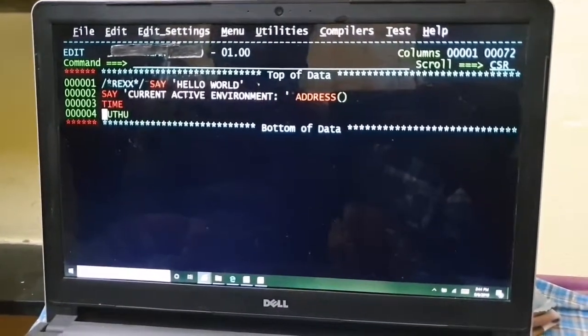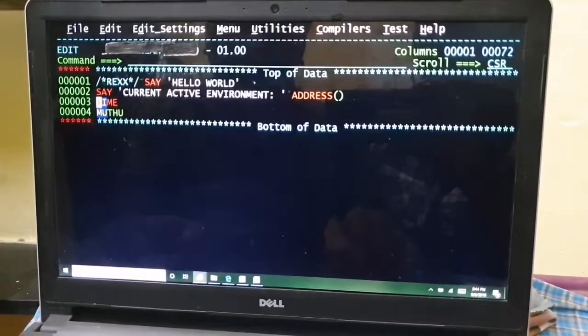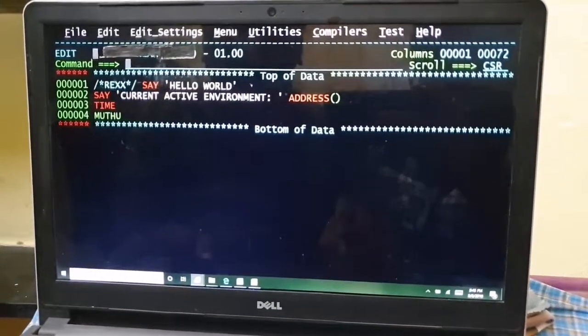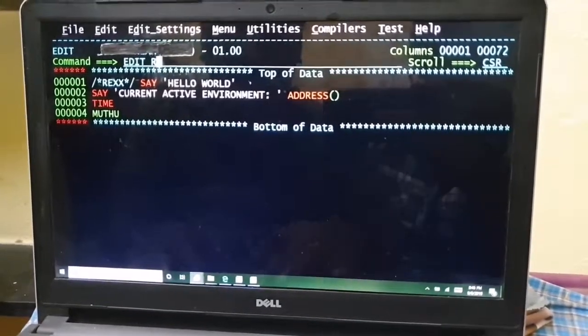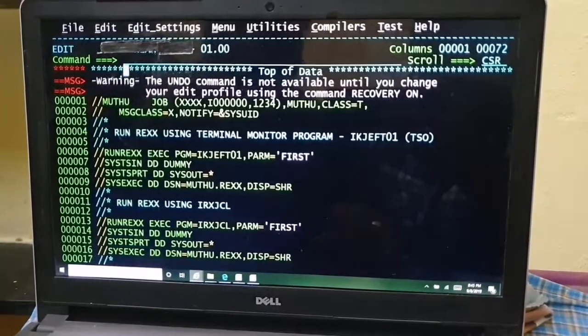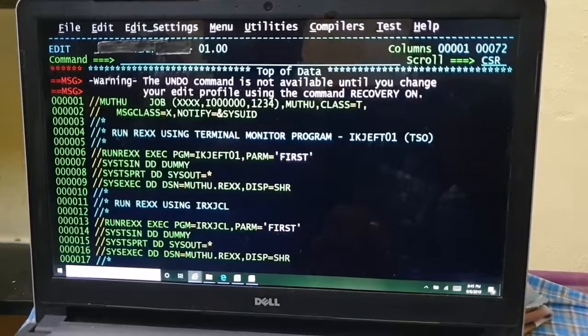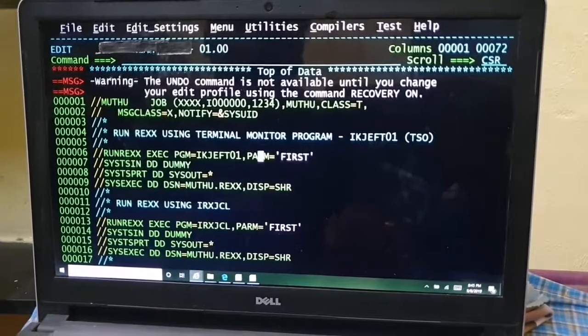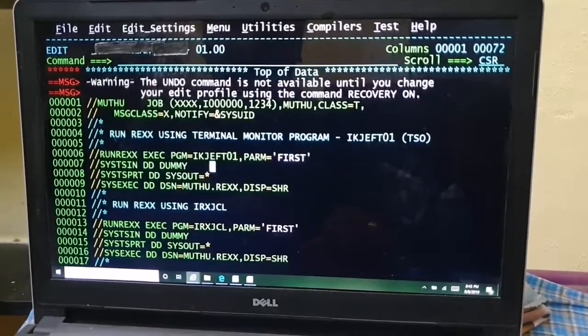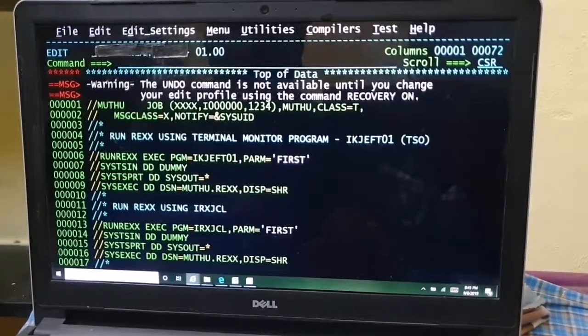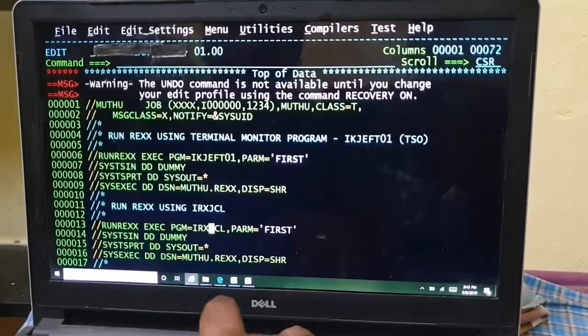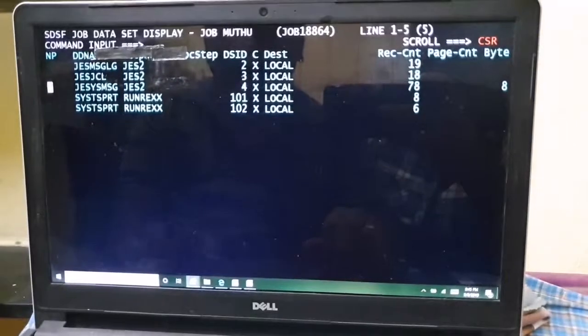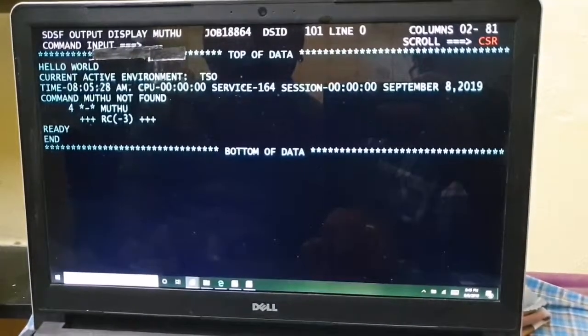And when REXX cannot understand any statements like TIME or MUTU, it will send this statement to the environment which is active at that point of time. So in our case, we'll execute this program both under IRXJCL as well as IKJFT01. Since IKJFT01 is a TSO environment, this TIME will go successfully but MUTU will fail. But in case of IRXJCL, both will fail because the environment is going to be MVS. So let's run these programs. Edit, RUN is a member I think I have prepared, yes. So as I have already shown on board, these are the data sets. This is my REXX source data set and this is my REXX program and this is IKJFT01.